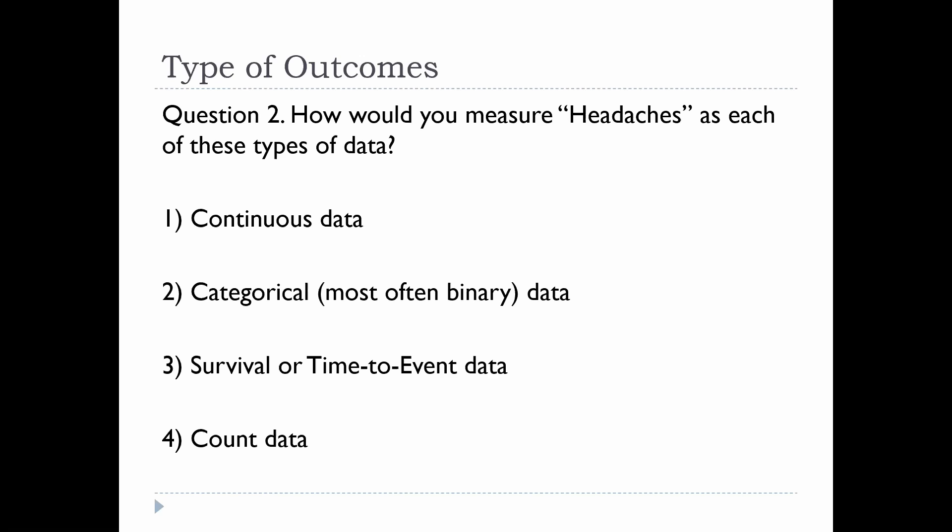For survival or time-to-event data for a headache, you could do time to next headache — that allows you to show that certain people don't get the headache at all, so you could have a Kaplan-Meier curve of headache-free survival. If your headache-free survival was 80%, that means 80% of patients didn't get a headache — it's both a time and a proportion estimate. For count data, it would be something like number of headaches, or number of migraine attacks per month.